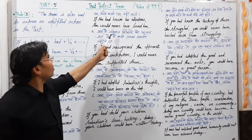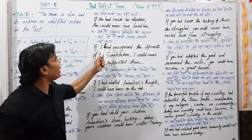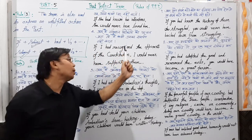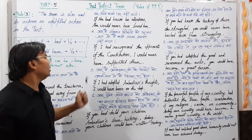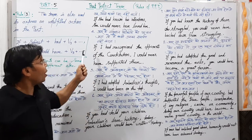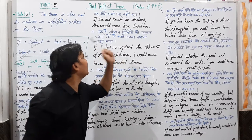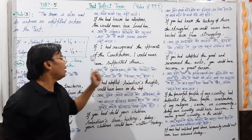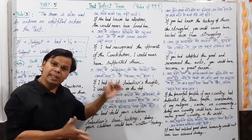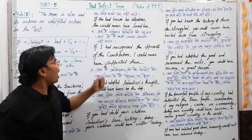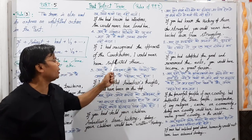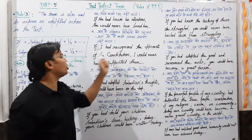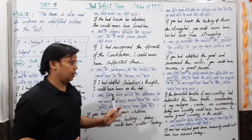Fourth example: अगर मैं सम्विधान विरोधियों को पहचान जाता, तो मैं कभी उनका समर्थन नहीं करता। English में: if I had recognized the opponents of the constitution, I would never have supported them। दूसरे तरीके से: I would never have supported them if I had recognized the opponents of the constitution।